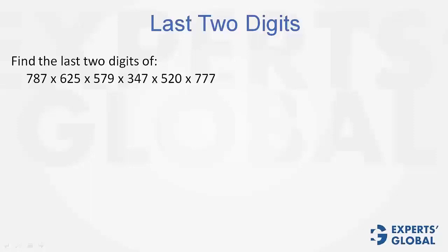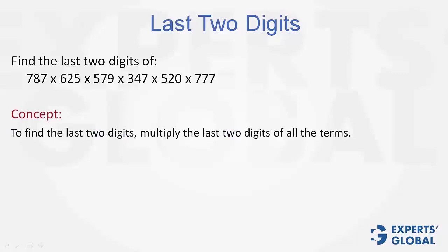To find the last 2 digits of such a big number, the underlying concept is that to find the last 2 digits, one needs to multiply the last 2 digits of all the terms.